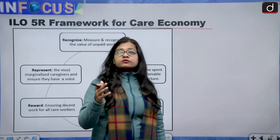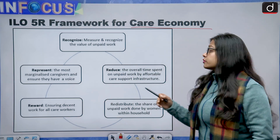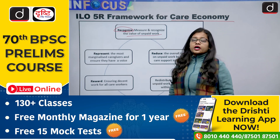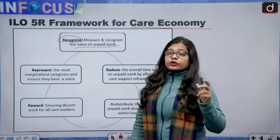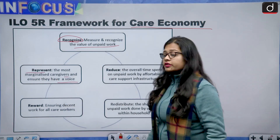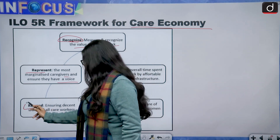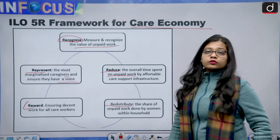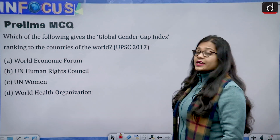According to the International Labour Organization's 5R framework for the care economy — which covers work done by females not included in official workforce categories — the five Rs are: Recognize and measure the value of unpaid work; Represent the most marginalized caregivers and ensure they have a voice; Reduce the overall time spent on unpaid work; Reward by ensuring decent work for all care workers; and Redistribute the share of unpaid household work done by women.